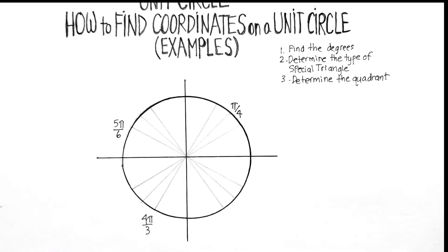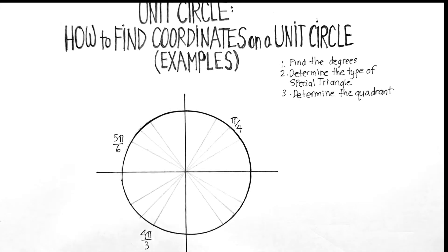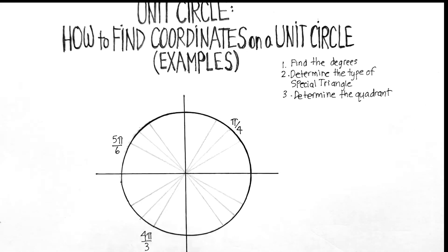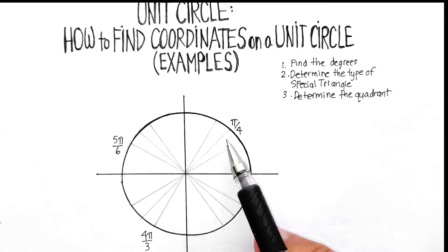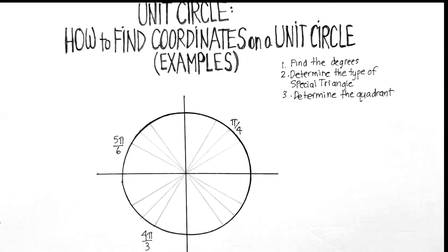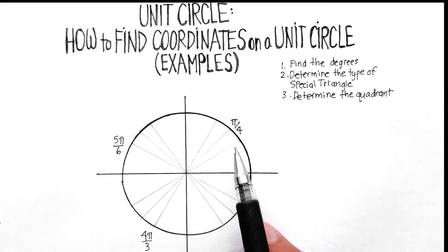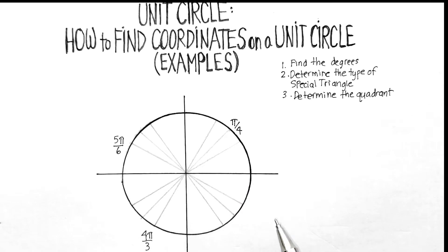Okay, in this video we're going to go over how you find the coordinates on a unit circle if you know the number of radians that you have. So remember the coordinates will give you something like 1, 0, 0, 1, that sort of thing.